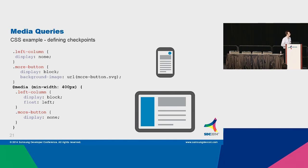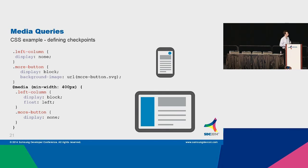Here is an example: the left column is hidden by default, and a 'more' button is displayed instead. As you can see on the smartphone, there is no left column — only the more button. But when the media query matches — the viewport width is greater than 400 pixels — the left column will show up and the more button will disappear. This is how media queries work.